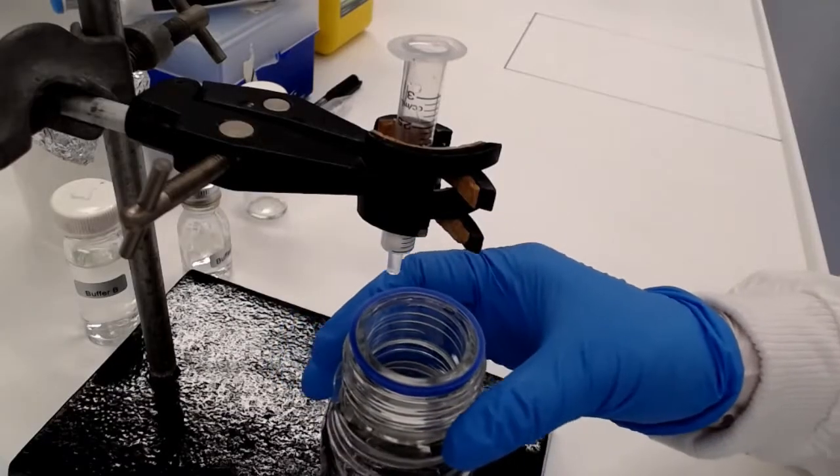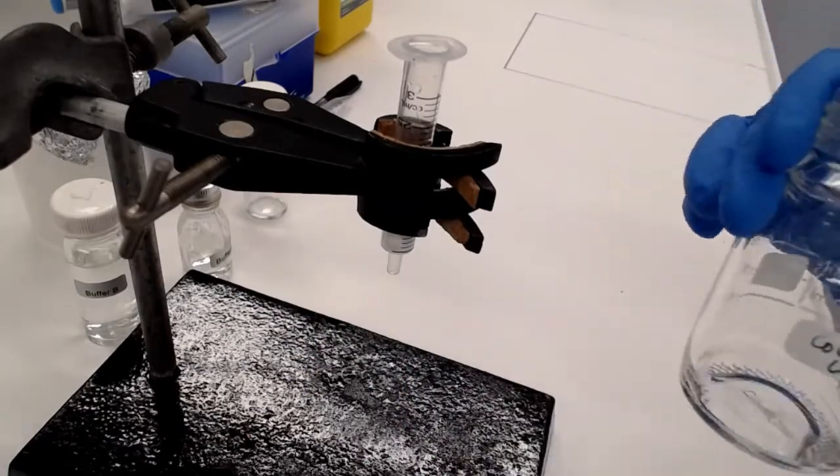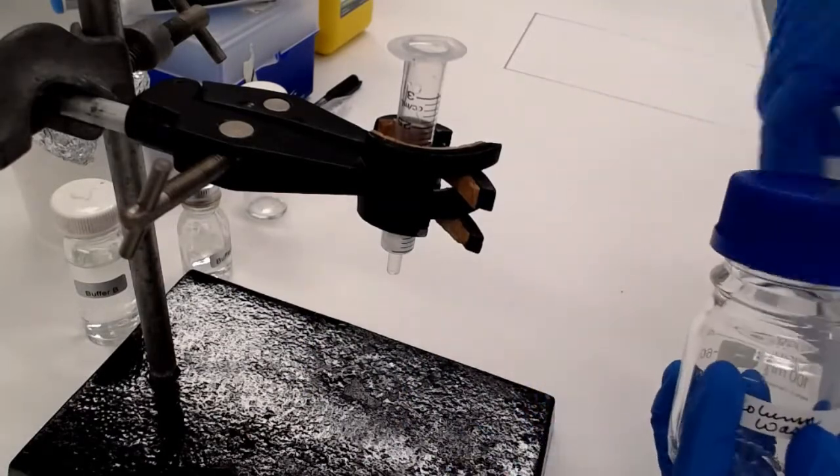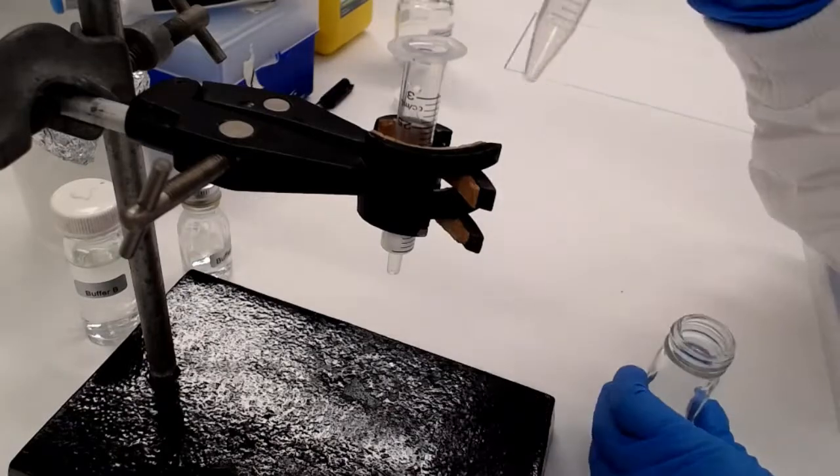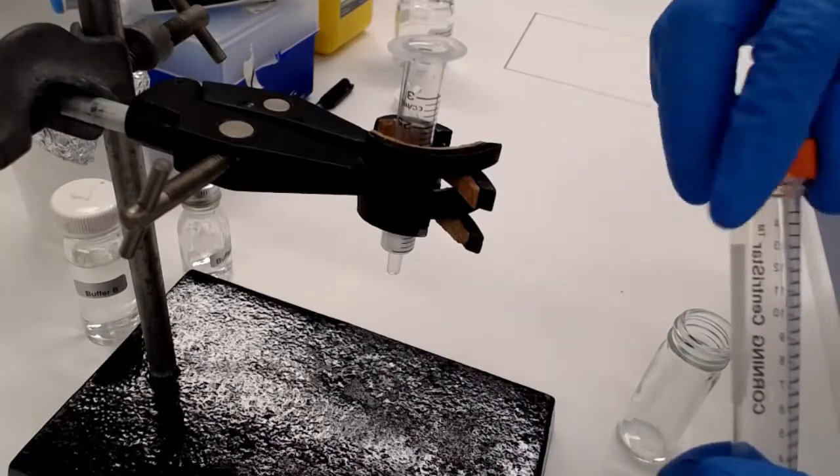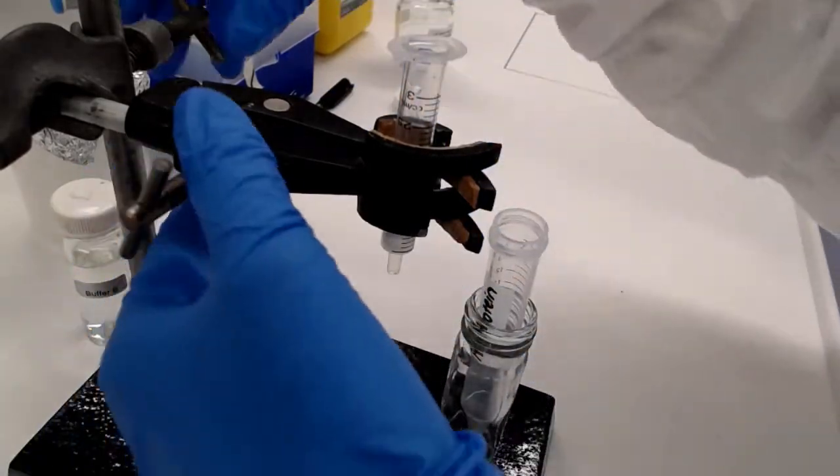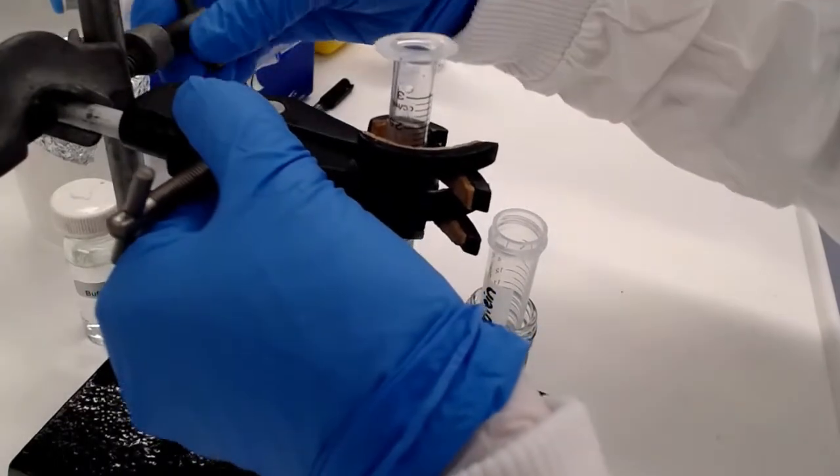We're now going to remove the column waste because the next drips that come through we want to collect and they're going to have our PFU in them. We're going to catch the PFU protein in a 15 mil falcon tube and we're just going to sit that in a McCartney bottle so it sits up straight.